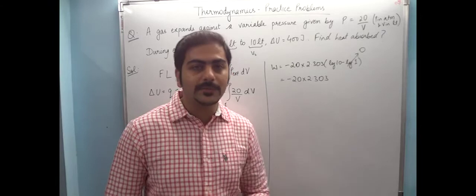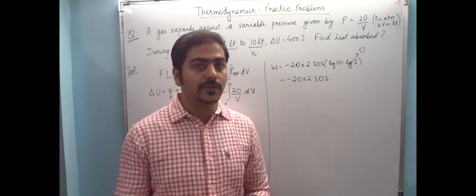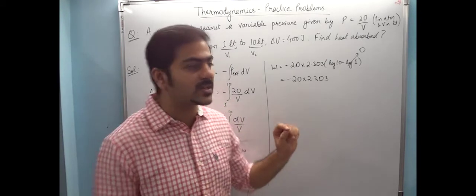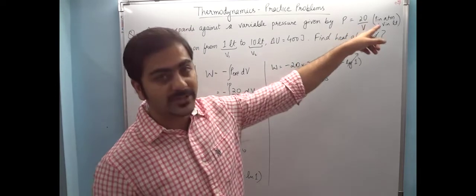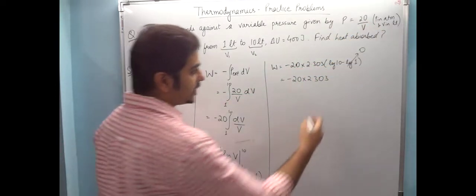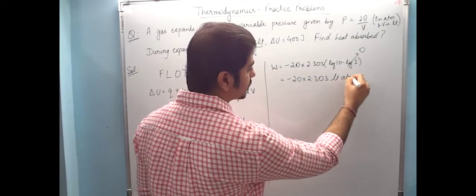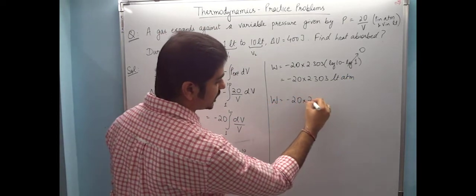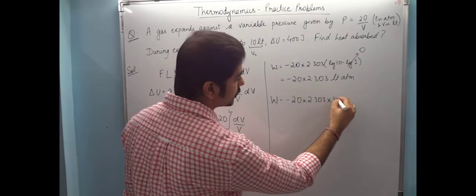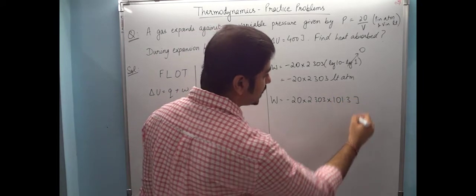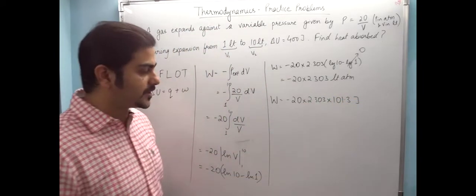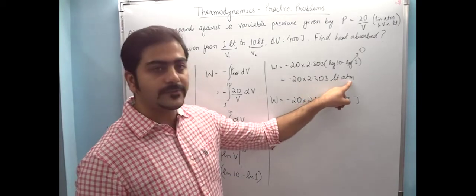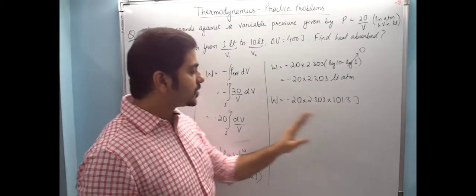Now the unit of work done will be liter atmosphere, because we took volume in liters and pressure in atmospheres as given in the question. So if it's in liter atmosphere, I need to convert work done to joules. In joules it will become 101.3. We've done this conversion in many previous videos - 1 liter atmosphere equals 101.3 joules.